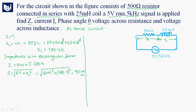Now we have to find phase angle theta. For an RL series circuit, theta equals tan inverse of XL divided by R, which is tan inverse of 785.4 divided by 500. We get theta equal to 57.51 degrees.